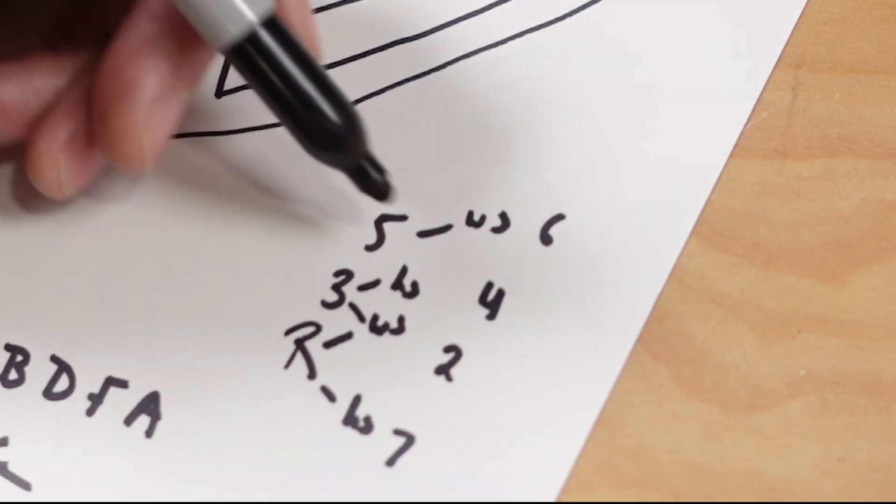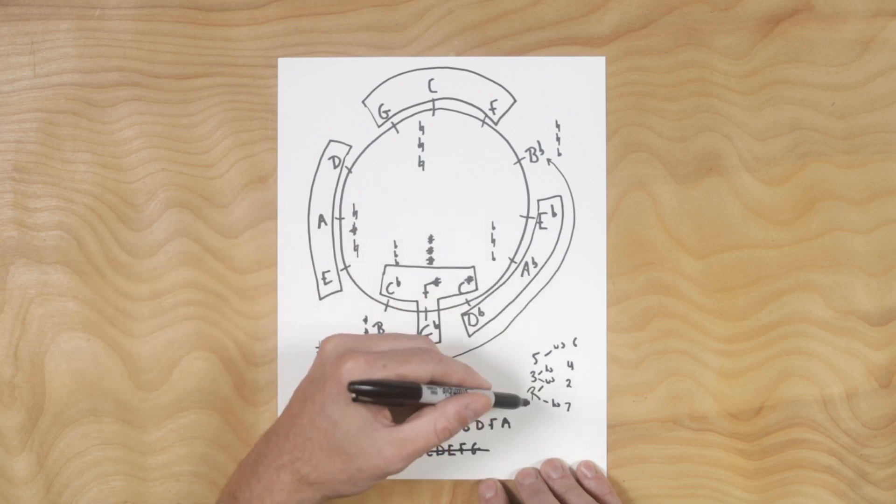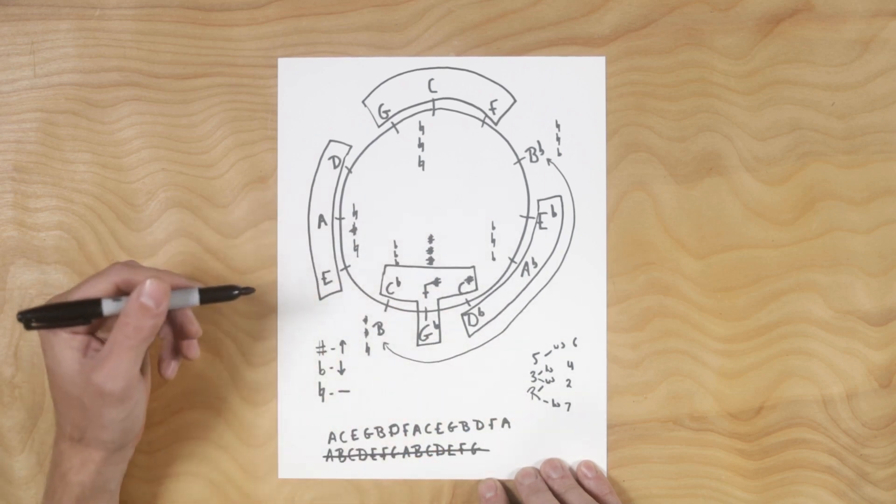So we have one, two, three, four, five, six, and then seven is below the root. And that is a really effective way to spell your major scales. You're thinking about them as chord tones.